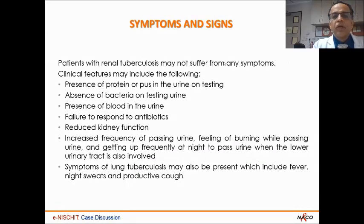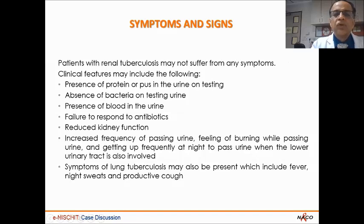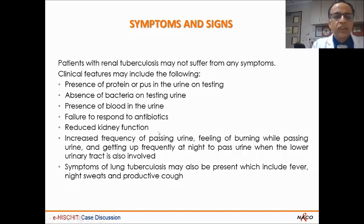Patients with renal tuberculosis may not suffer from any symptoms — this is the first take-home message. Clinical features could include protein or pus in the urine, which can be seen in many kidney diseases. More importantly, absence of bacteria on urine testing, presence of blood in the urine, and failure to respond to antibiotics are key indicators. Patients could have reduced kidney function; if unilateral involvement is found after excluding other causes, suspect tuberculosis. Increased frequency, burning sensation, and nocturia when the lower urinary tract is involved — especially if urine cultures are repeatedly negative.